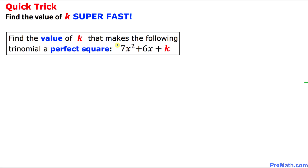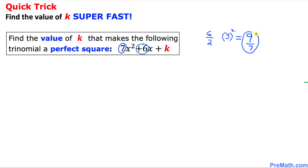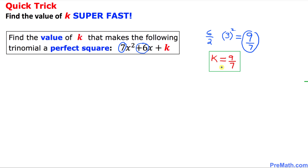Find the value of k that makes the following trinomial a perfect square. We want to find the value of k. Let's focus on the middle number, the coefficient of x, which is positive 6. Always divide that number by 2, giving us 3, and then we square it, giving us 9. Now focus on the leading coefficient, which is 7. Divide 9 by that leading coefficient, and that is our k value. So k turns out to be 9 over 7.